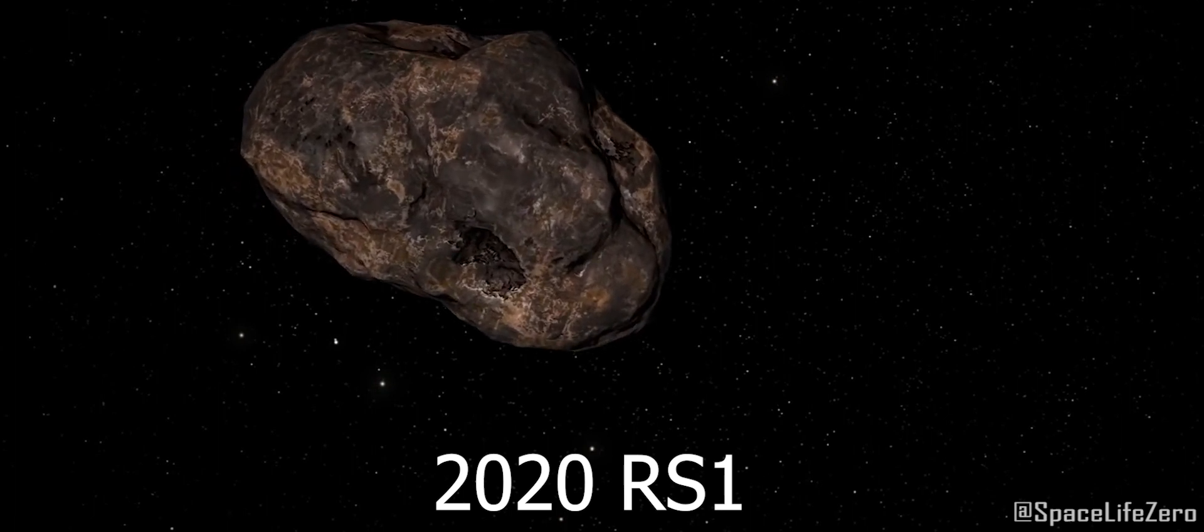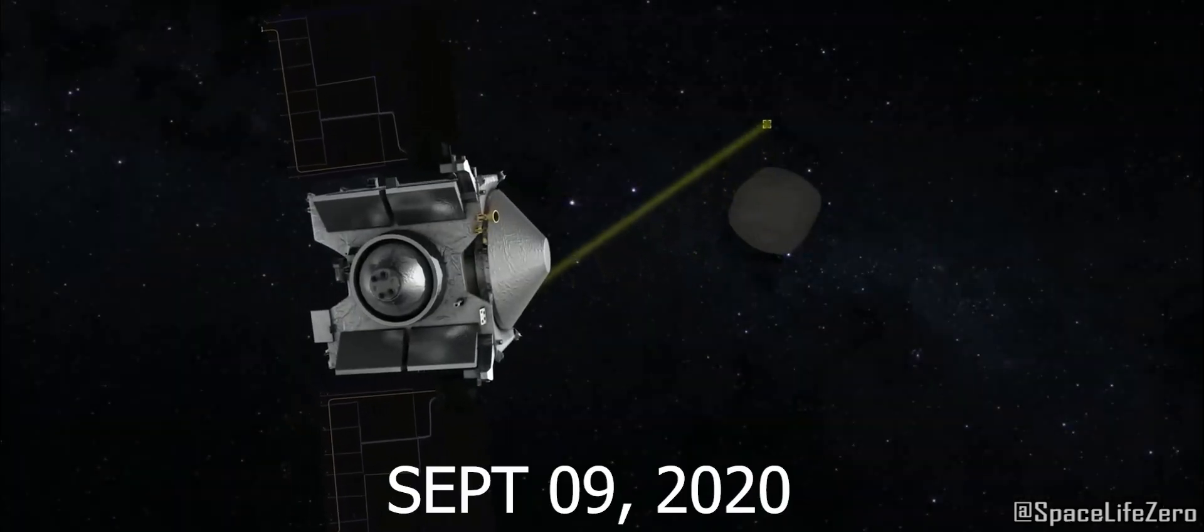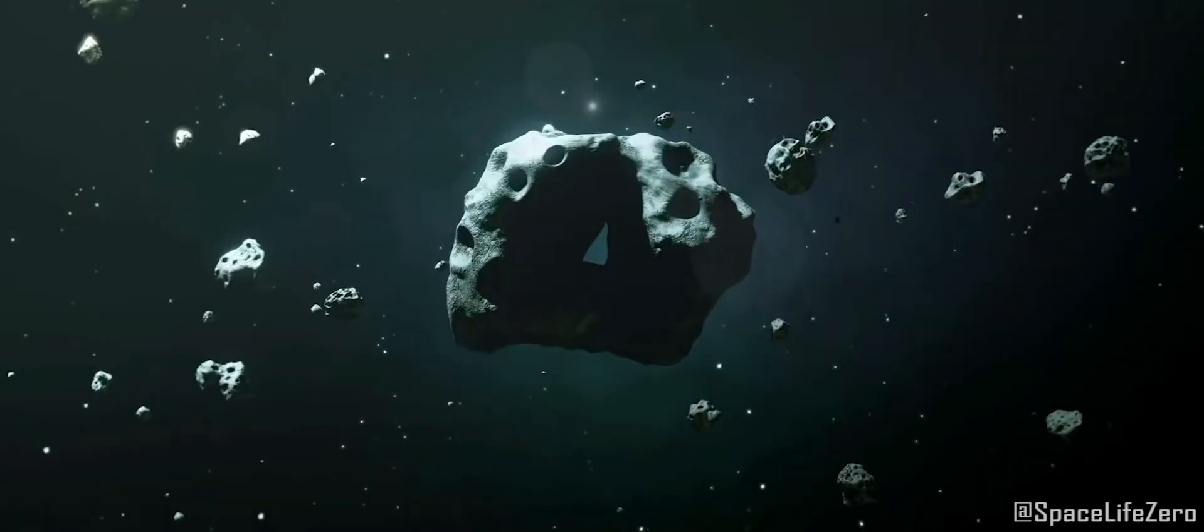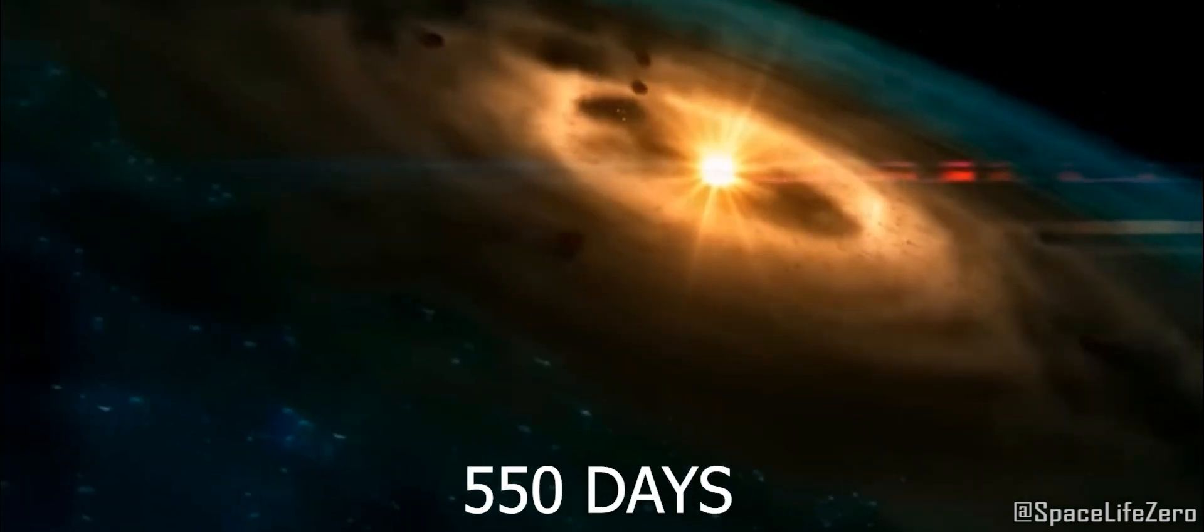Asteroid 2020 RS-1. This asteroid was discovered on September 9, 2020, and it belongs to the Apollo group. It makes one orbit around the Sun in 550 days.